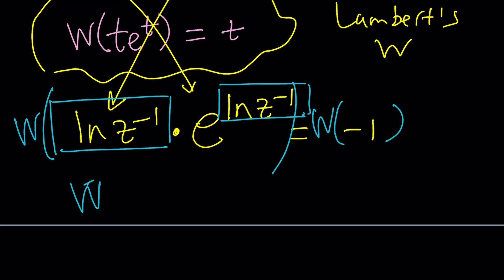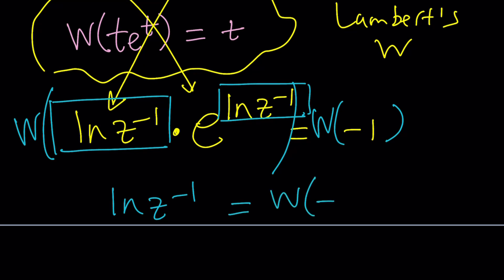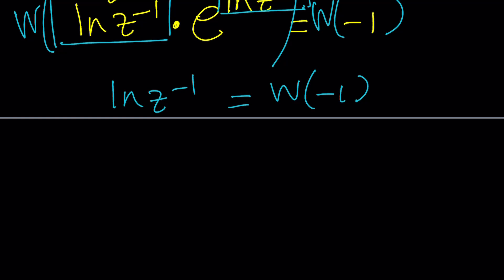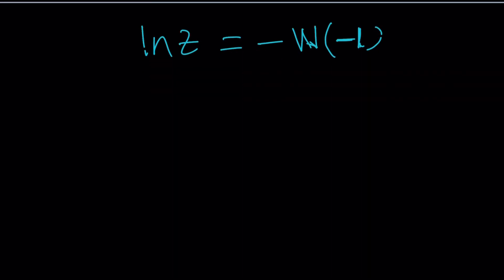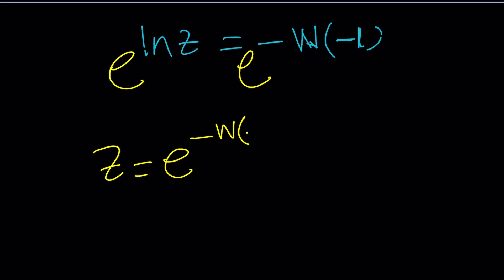We get ln z to the power of negative 1 from here — that's the result of applying Lambert's W. On the right-hand side, we just get W of negative 1, which obviously has a numerical value. Then we can multiply both sides by negative 1, which gives us ln z equals the negative of W of negative 1. And then we can solve for z by doing e to the power of both sides. So z is going to be e to the power of negative W of negative 1.